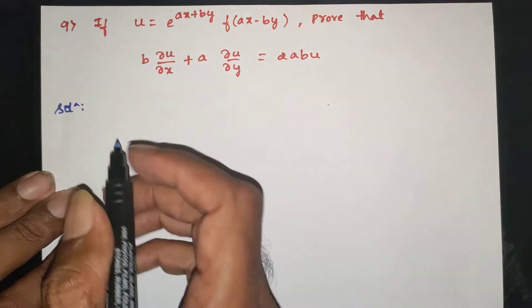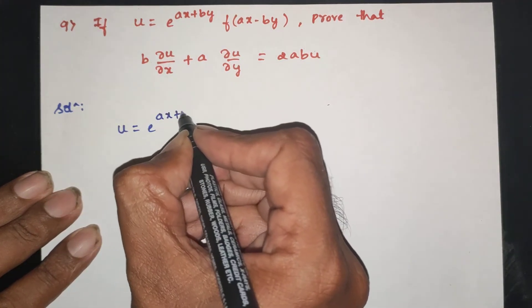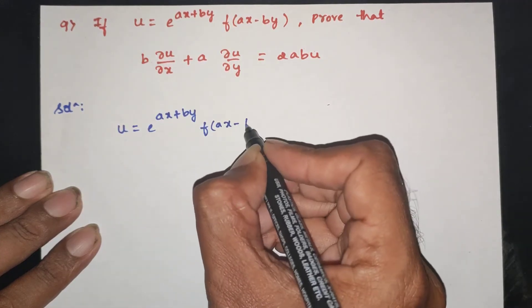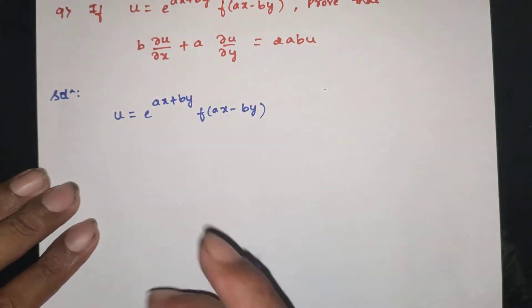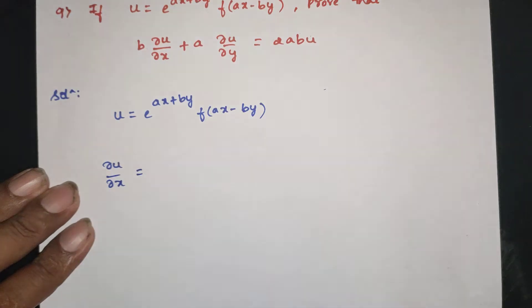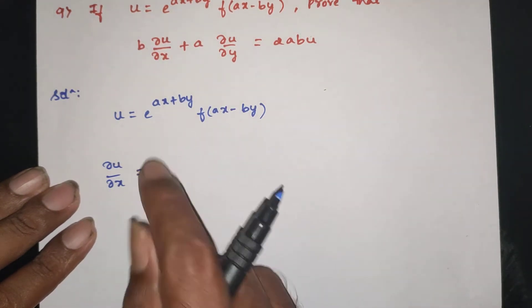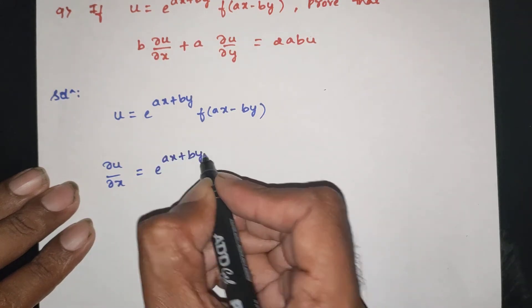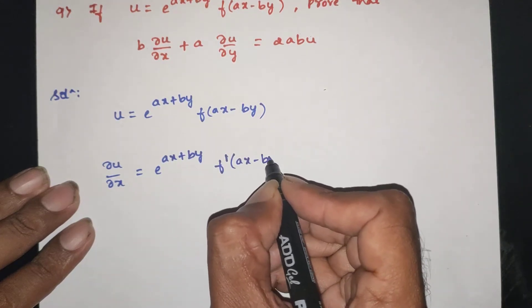If u is equal to e power ax plus by, f of ax minus by. Let u equal e power ax plus by, and f equal f of ax minus by.